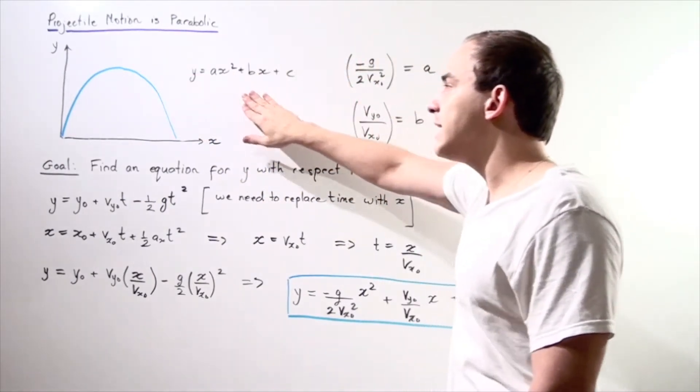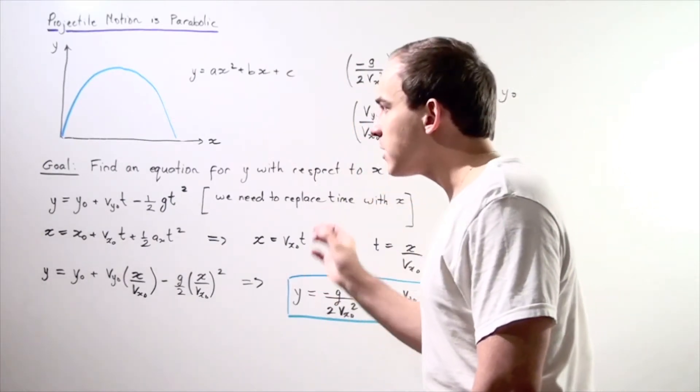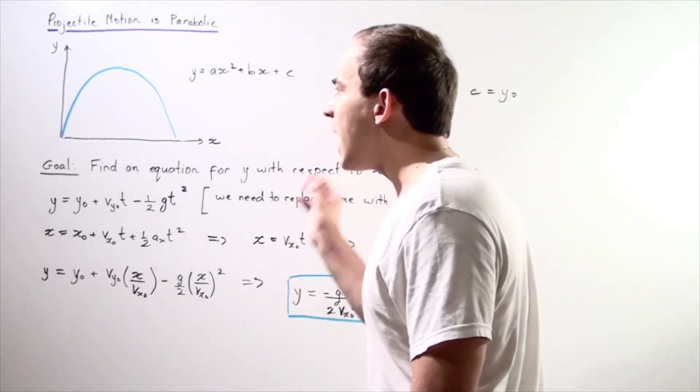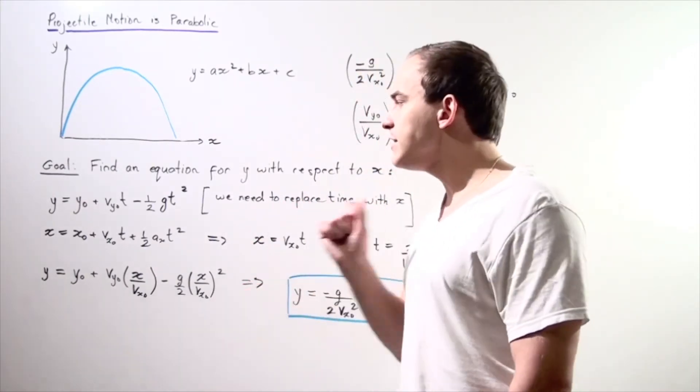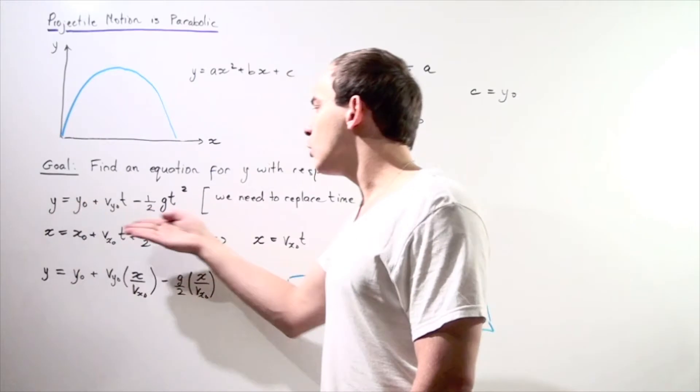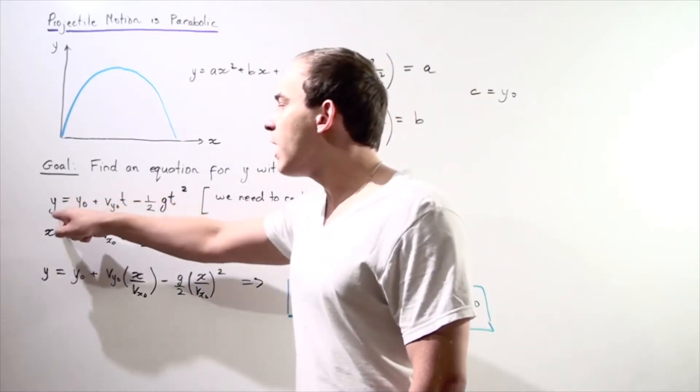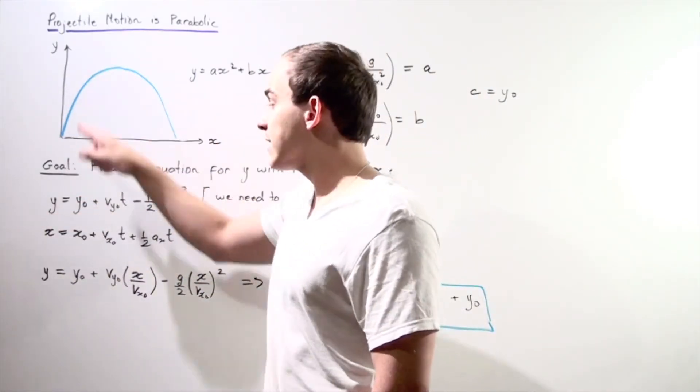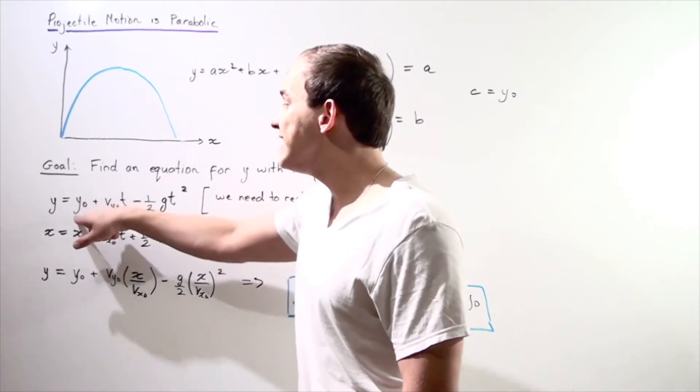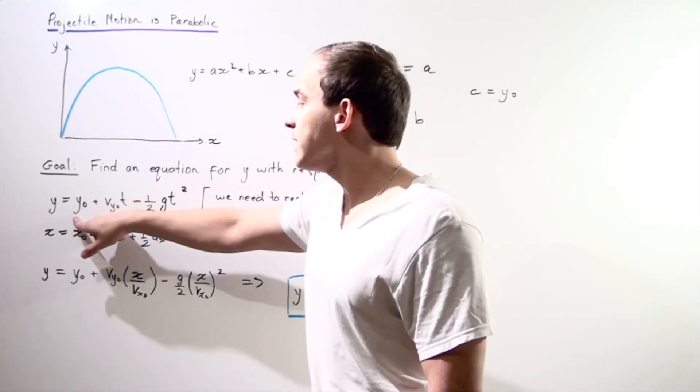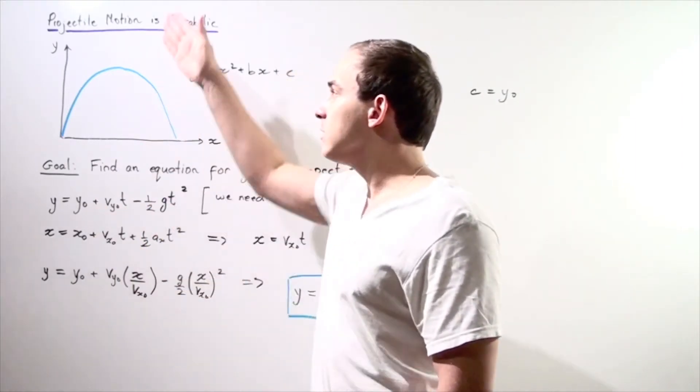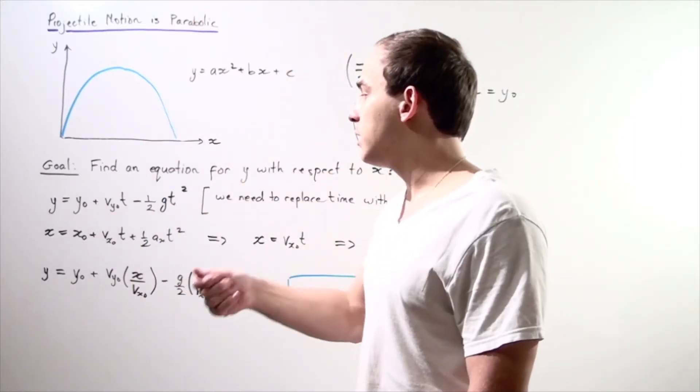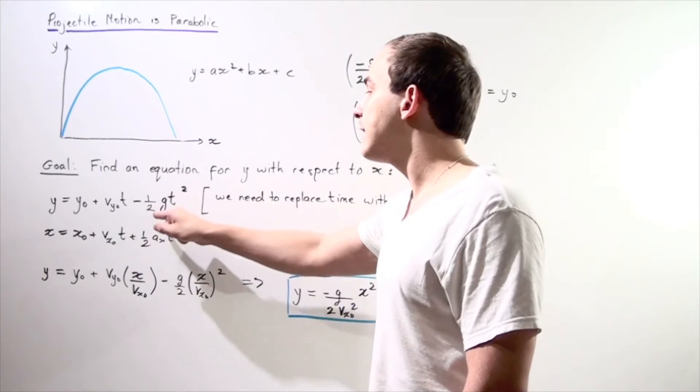So let's begin by making the assumption that our object is moving with constant acceleration and there is no air resistance. That means we can write the following formula: our final position along the y-axis, y, is equal to our initial position along the y-axis, y_naught, plus our initial velocity along the y-axis multiplied by time minus one-half gt squared.